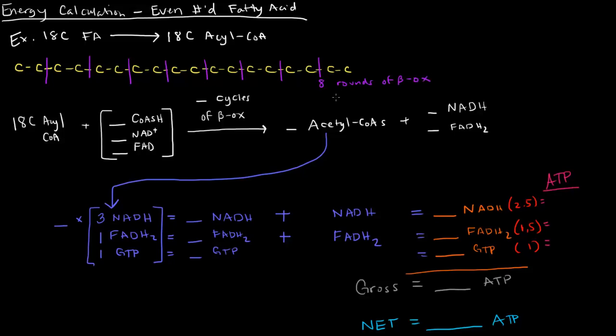If that's 8 rounds of beta-oxidation, how many acetyl-CoA's do we actually make? 1, 2, 3, 4, 5, 6, 7, 8, 9 two-carbon molecules, which is 9 acetyl-CoA's.